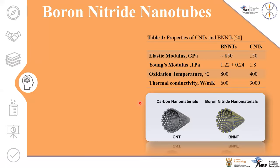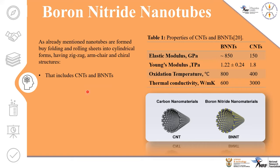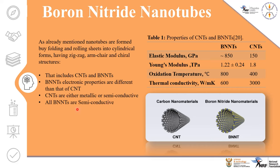Nanotubes are formed by folding and rolling sheets into cylindrical forms having zigzag, armchair, and chiral structures — this includes carbon nanotubes in general and also boron nitride nanotubes. The electronic properties of boron nitride nanotubes differ from carbon nanotubes: carbon nanotubes are either metallic or semiconducting, while boron nitride nanotubes are consistently semiconducting. This table compares the properties of BNNTs and CNTs.